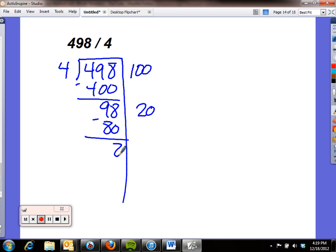98 minus 80 is 18. I know that 4 will go into 18 four times. 4 times 4 is 16. I subtract: 2. I'm done. This is part of my quotient: 4. 20 is part of my quotient, and 100 is part of my quotient. 124, remainder 2.